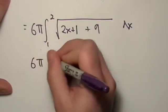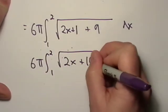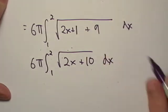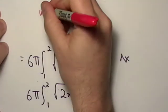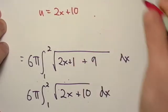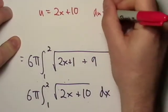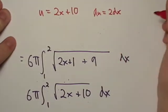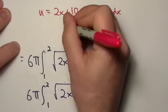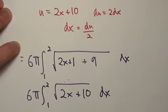All right. 6π from 1 to 2, this is going to be √(2x+10) dx right there. Let's go up here and let's do a u substitution in the color of red. u = 2x+10. So that means du is going to be equal to 2 dx.